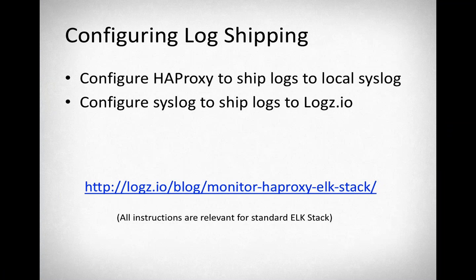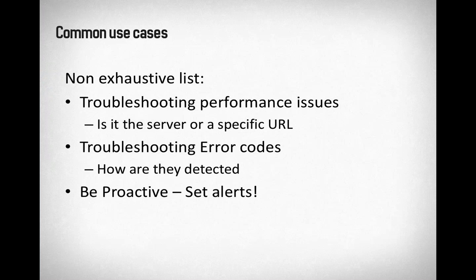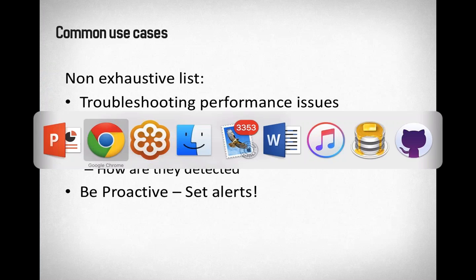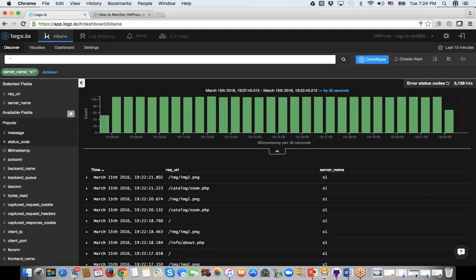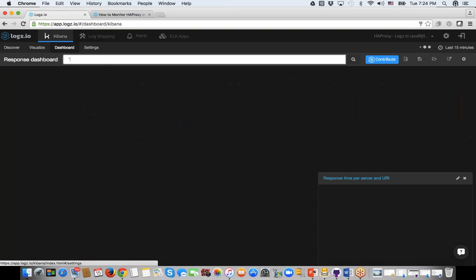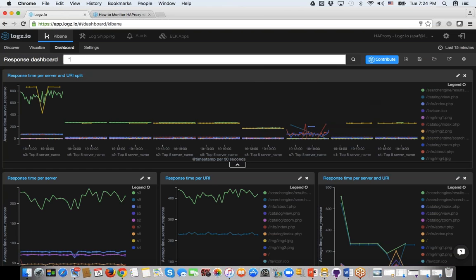We've talked about configuring log shipping. There's also the blog post with all the instructions. What I want to show right now is a couple of common use cases based on feedback from Baptiste and the folks at HAProxy — how to do troubleshooting and analysis using the ELK stack. The first use case is troubleshooting performance issues. As Baptiste mentioned, you can use HAProxy logs to figure out what URL or server is running slow, but sifting through all the logs takes a lot of time.